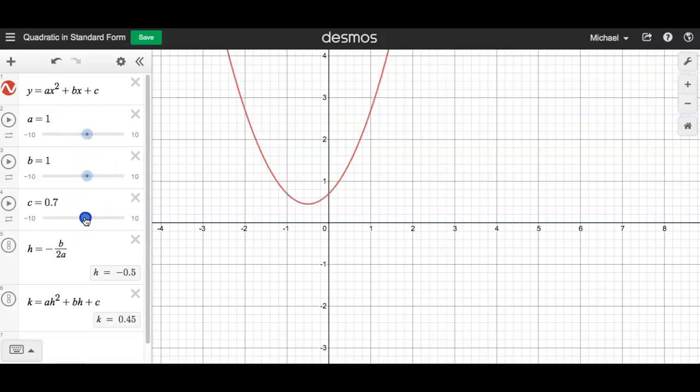Now, c here, if you notice, c just moves it up and down. c is the y-intercept. So right there it's one. Here, it's zero. That's where it crosses the y-axis.